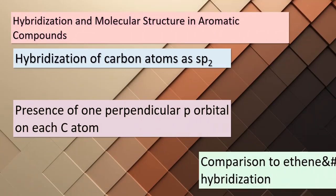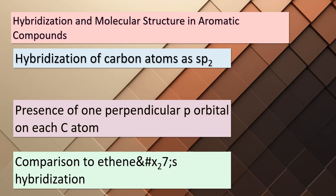In aromatic compounds like benzene, each carbon atom undergoes sp² hybridization, resulting in a unique molecular arrangement. Just like ethene, there's one p orbital on each carbon atom, oriented perpendicularly to the molecule's plane. However, the fascinating twist here is that we have not just one, but six p orbitals forming a ring-like arrangement, as depicted in figure 9.25. This leads us to the captivating structure of benzene. Now pay close attention as we explore how the six valence electrons find their place within these p orbitals.